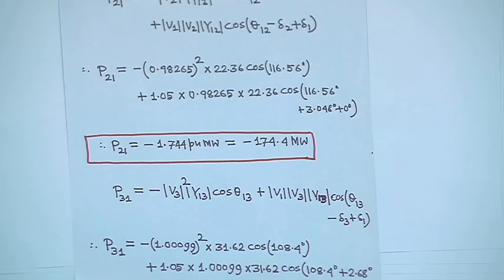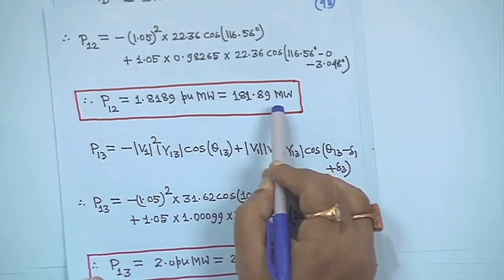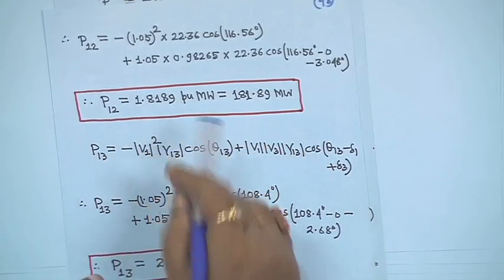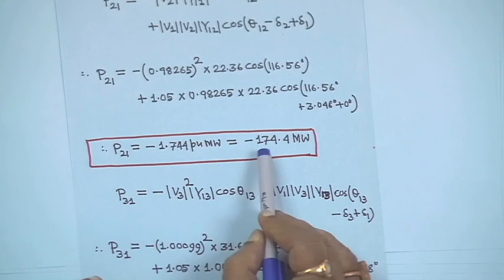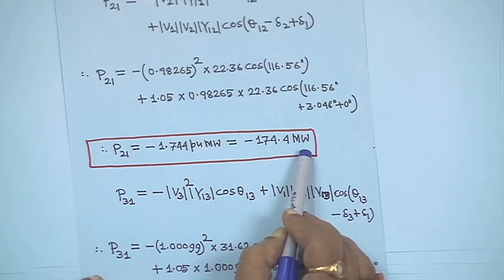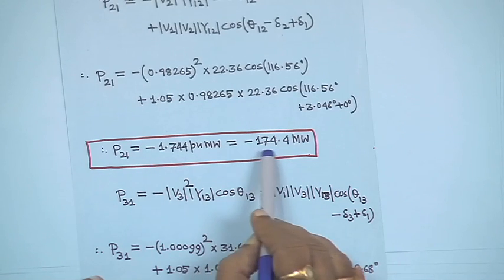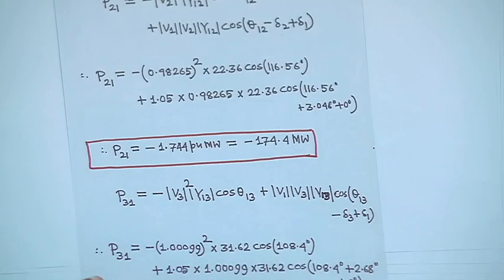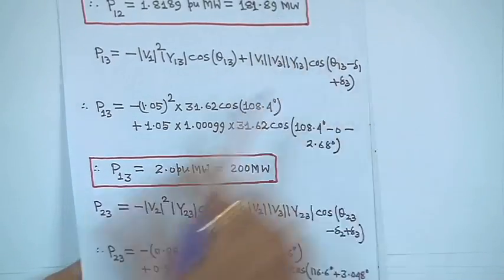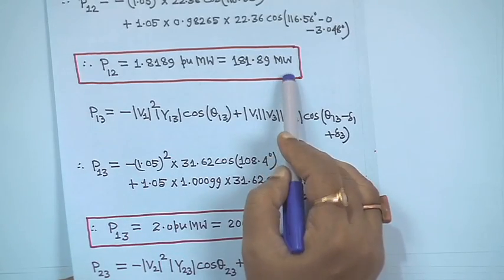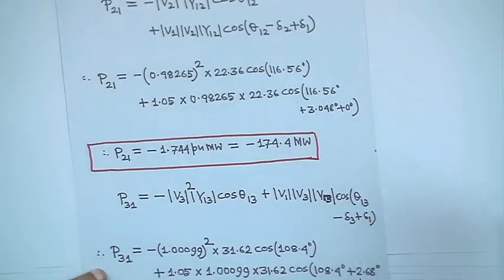If you see P₁₂ here, it is 181.89 megawatt. That means it is positive, so power is flowing from 1 to 2. And P₂₁ is minus 174.4 megawatt, meaning power is actually flowing from 1 to 2, but P₂₁ is showing minus. The difference between P₁₂ = 181.89 and P₂₁ indicates resistive loss in the line.